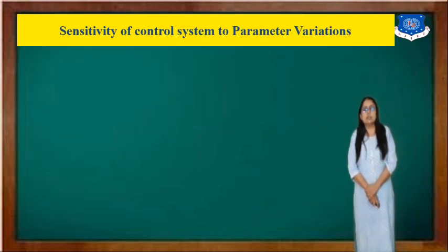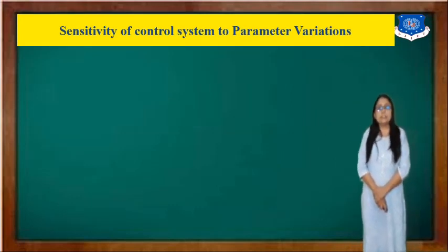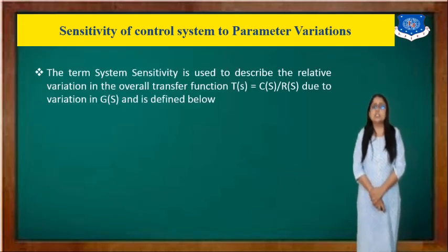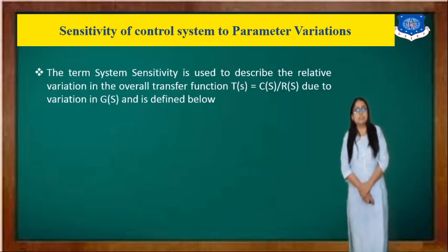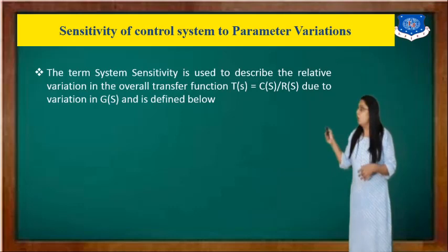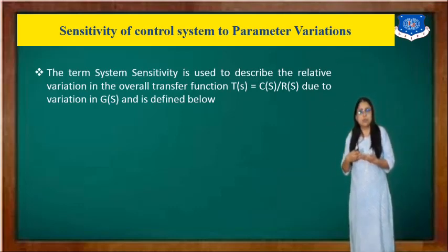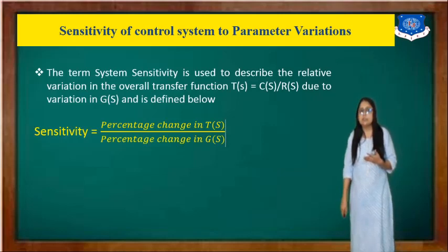Next we will discuss the sensitivity of a control system to parameter variation. The term system sensitivity is used to describe the relative variation of a transfer function — that is output upon input, C(s)/R(s) — due to variation in G(s). That is the sensitivity defined with respect to G(s).